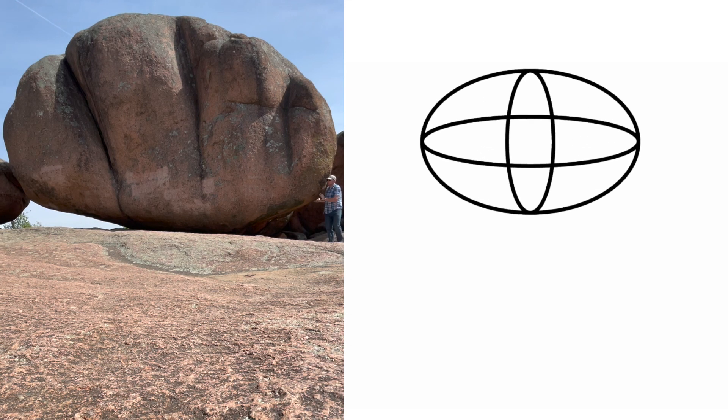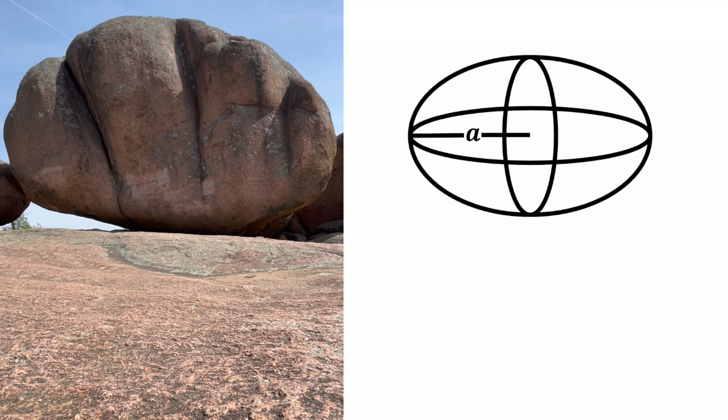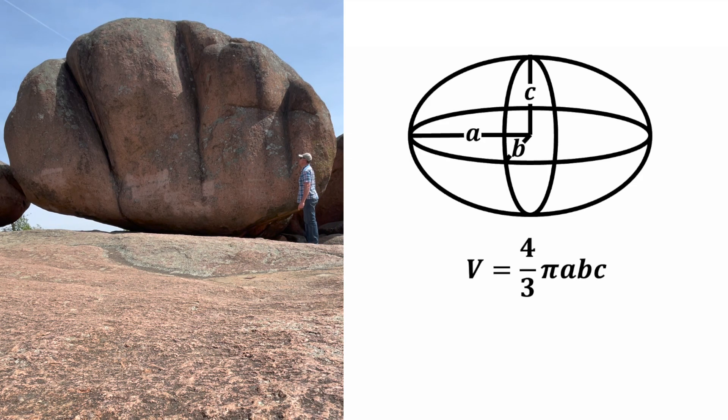So first we got to find the volume and then multiply by the density. So I think this rock is shaped pretty much like an ellipsoid. And for an ellipsoid, if it has a radius in this direction of A, a radius in this direction of B, and a radius in this direction of C, the volume is just four thirds pi times A times B times C.